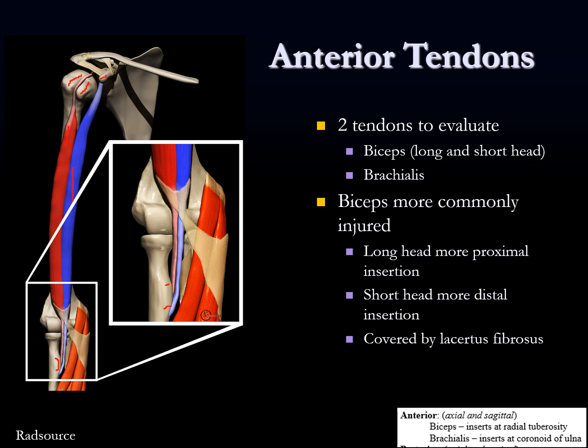Sometimes you can have tears of just one of the biceps heads. If you see a tear that's a little more proximal, call that a long head biceps tear; if it's more distal, it potentially involves the short head biceps insertion. This is covered by the lacertus fibrosus, an aponeurotic structure that begins proximally at the level of the distal humerus and wraps around the ulna at the medial elbow.